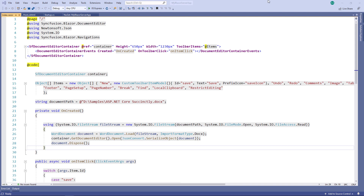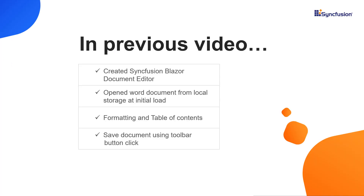You can also watch the video 'Create a Document Editor in a Blazor Server Application' from the link provided in the description. Let me provide an overview of my previous video. In my previous video, I explained how to create the Syncfusion Document Editor component and opened a document from local storage at the initial load of the component. I also explained the workings of its basic features: formatting, adding a table of contents, and saving the modified document by clicking on the custom save item.